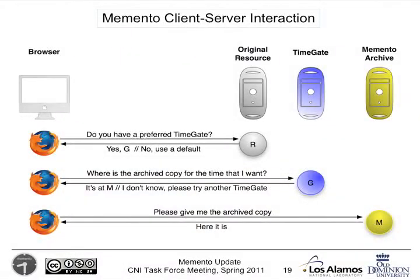Here is the one-slide Memento interaction summary. The browser goes to the original resource and asks, do you have a preferred time gate? The resource might say yes, please go see this resource we call G, but in the current state of the web it's very likely to say no, use a default. After selecting a time gate, the browser says, where's the archived copy for the time I want? The time gate says, I know about that resource, it's at M — or try another time gate. You cycle through time gates until one recognizes the resource, then go to the archive copy and it delivers it back. That is Memento in a nutshell.